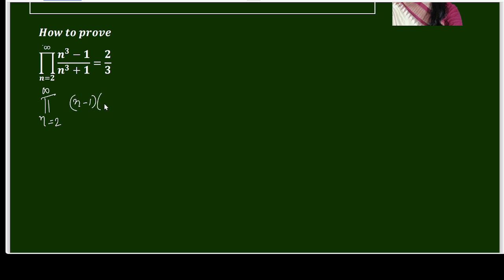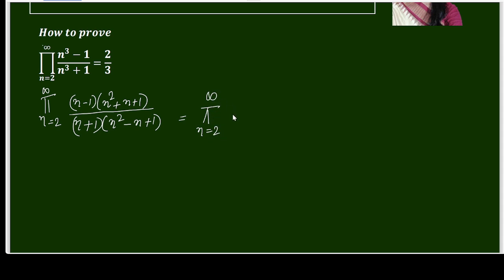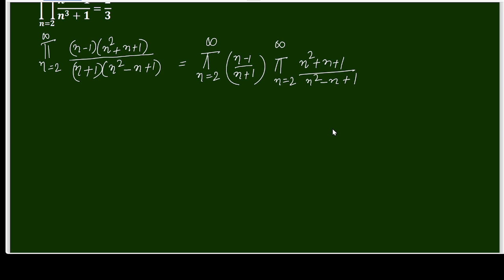We can write the numerator n³ - 1 as (n - 1)(n² + n + 1) and the denominator n³ + 1 as (n + 1)(n² - n + 1). This allows us to split the product into two separate products: the product from n=2 to infinity of (n-1)/(n+1), and the product from n=2 to infinity of (n² + n + 1)/(n² - n + 1).